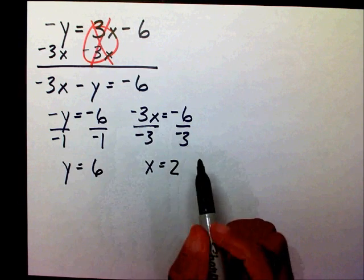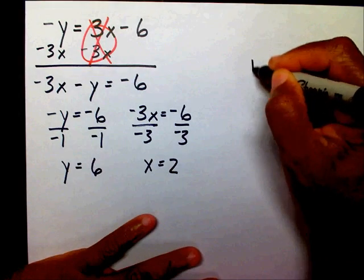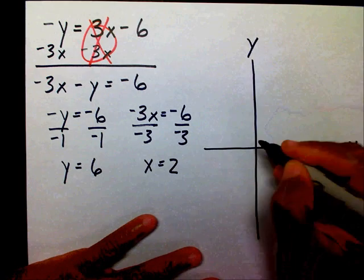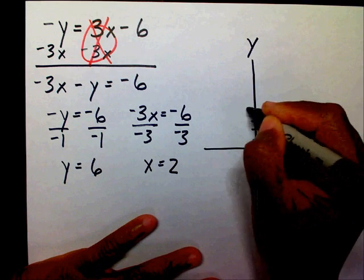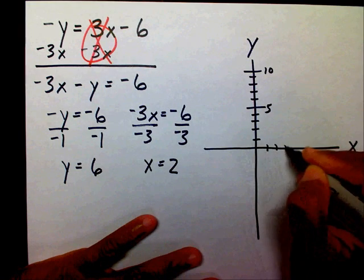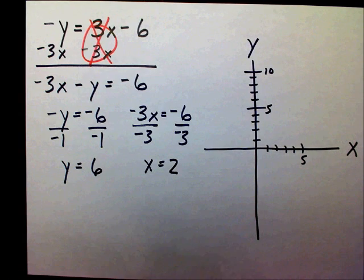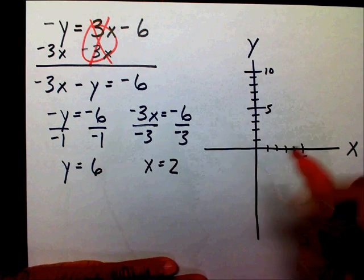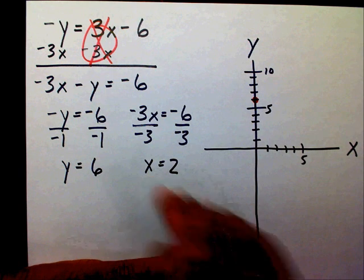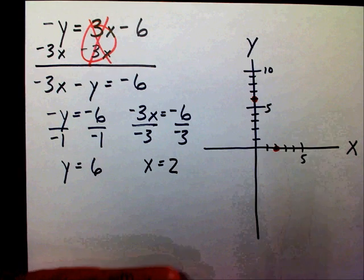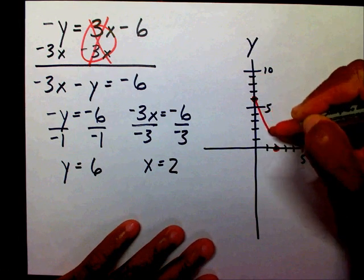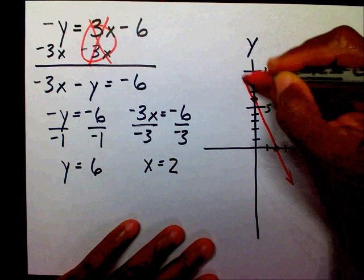Now let's graph our line using our two intercepts. This is our x-axis, this is our y-axis. My y-intercept is 6, so on my y-line I'll put a dot on 6. My x-intercept is 2, so on my x-line I'm going to put a dot on 2. I'm going to connect my two dots and extend my line. And there you go.